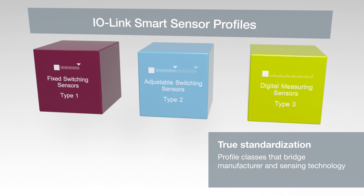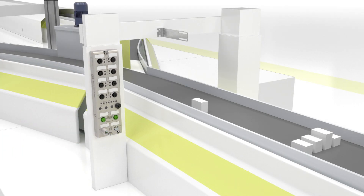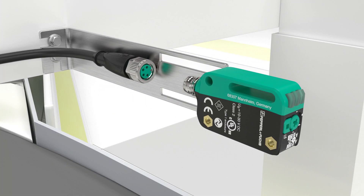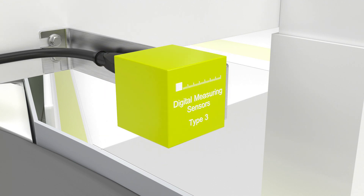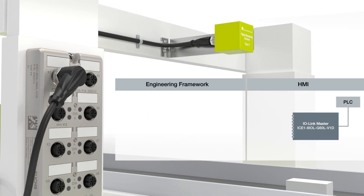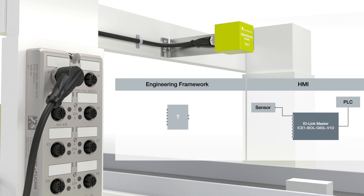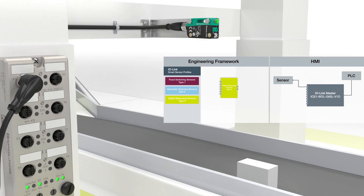For Type 1 fixed switching sensors, where previously complex individual programming was necessary, a few profile-specific function blocks now simplify integration into the control system. This yields a number of advantages when integrating different sensors in machines and systems. For example, if a photoelectric distance sensor is used in an application, the user can simply access the general function block of the respective profile class and commission the device without additional programming.